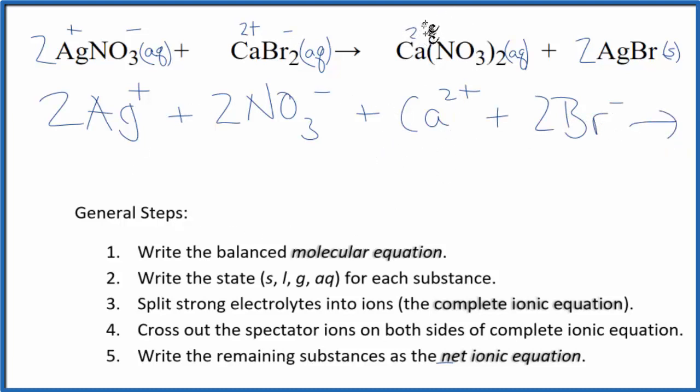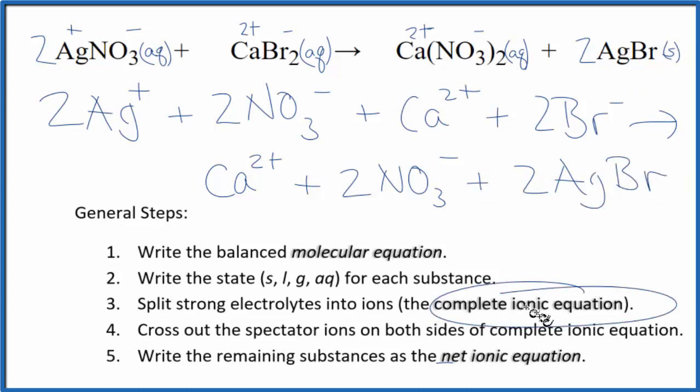For the products, calcium is 2 plus. We said the nitrate is 1 minus. So we have Ca2 plus, plus two of these nitrate ions, 2NO3 minus. And then in net ionic equations, we don't split solids apart. So we have 2AgBr. And this is the complete ionic equation.